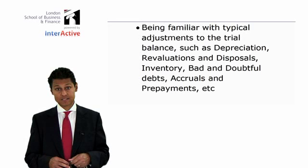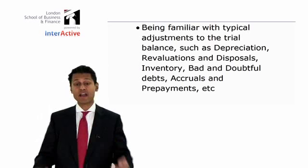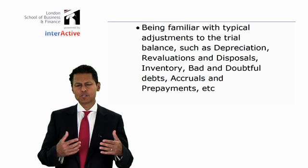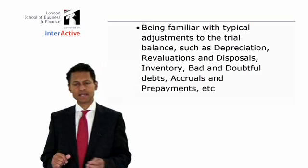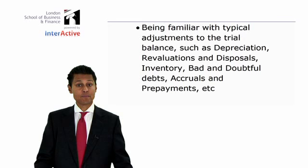That's called depreciation. Sometimes if you've got a building, you might consider revaluing it upwards, and there's a journal entry for that. A journal is simply a diary that records the debits and credits. If a building goes up in value, you debit the building account and credit something called revaluation reserve. I'll explain all this on the main course.